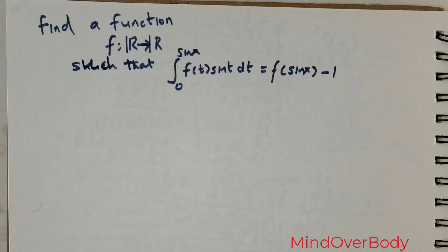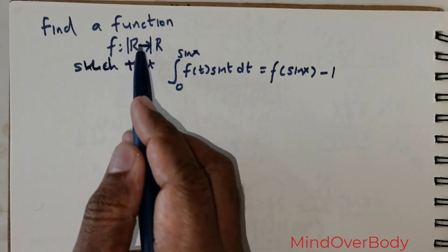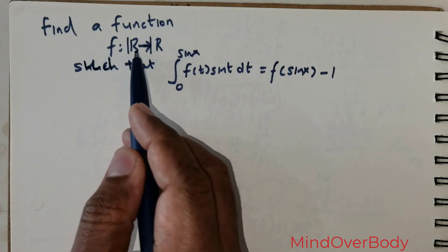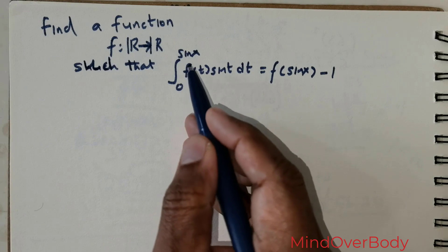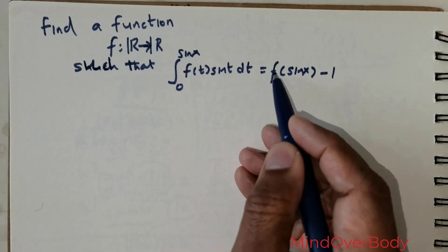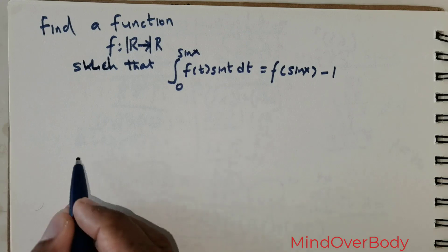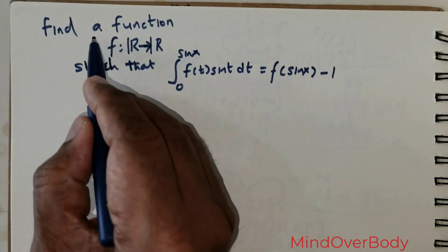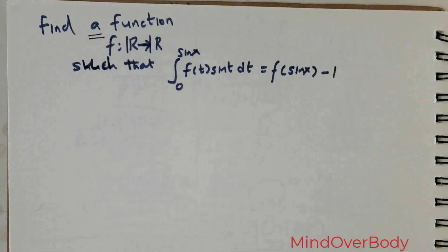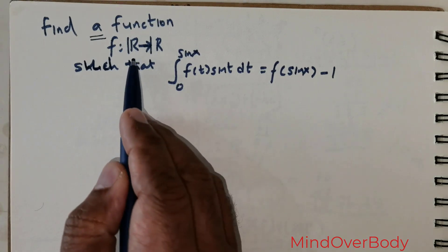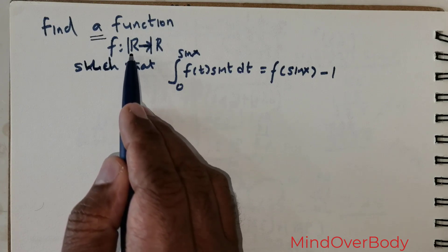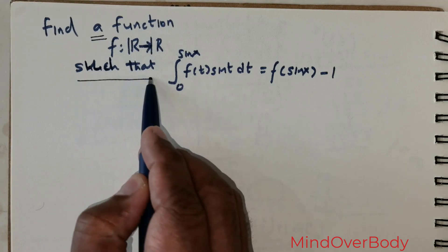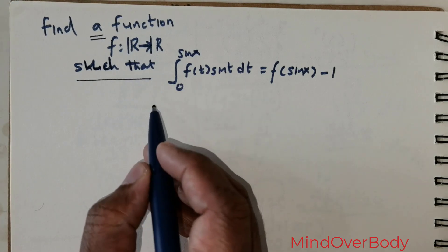Welcome students. We are given this question: find a function f defined from R to R, given that the integral from 0 to sin x of f(t) sin(t) dt equals f(sin x) minus 1. The question wants us to find a function, and the domain is given as the set of real numbers.